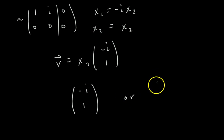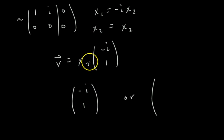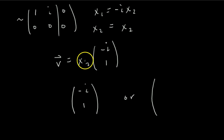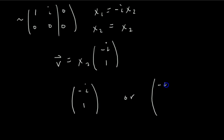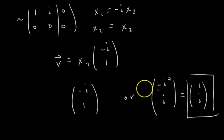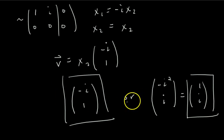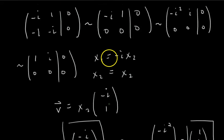For the answer to part C, we can give negative i, 1. Or we could scale it by any scalar — including a complex number. If we pick x2 equals i and multiply by i, we get negative i squared and i, which equals 1 and i. So (1, i) is another valid eigenvector. These two vectors — (negative i, 1) and (1, i) — don't look like scalar multiples of each other, but they are. Both are eigenvectors with eigenvalue 1 plus i.